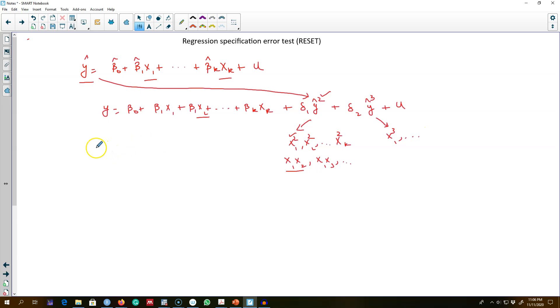All we have to do is test for the null hypothesis that delta 1 and delta 2 are equal to 0. We can use an F-test or an LM test to test whether delta 1 and delta 2 are equal to 0, and if H0 is rejected, it implies that there is functional form misspecification in our model.